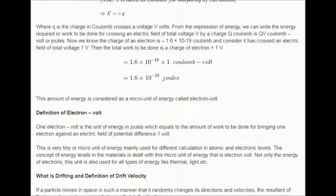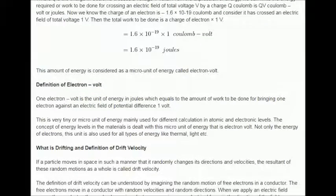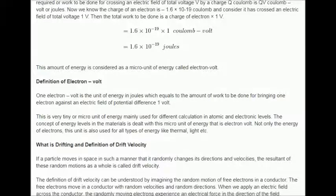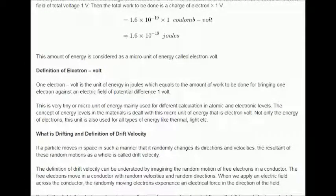This is very tiny or micro unit of energy mainly used for different calculation in atomic and electronic levels. The concept of energy levels in the materials is dealt with this micro unit of energy that is electron volt. Not only the energy of electrons, this unit is also used for all types of energy like thermal, light etc.